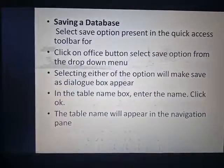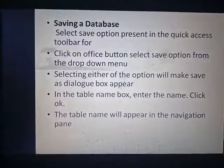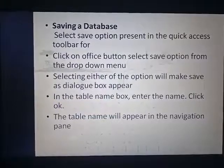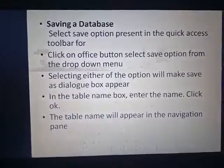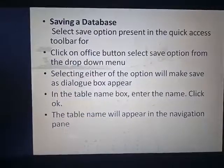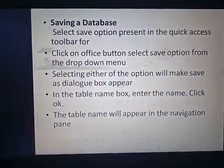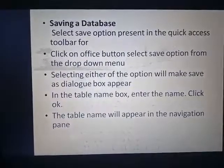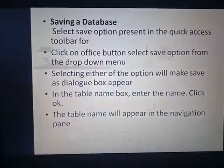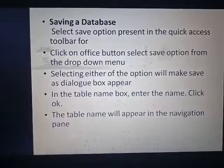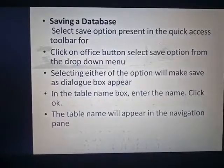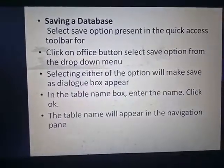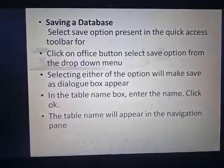For saving a database, we have to click on the Office button at the topmost side and after that click on Save, or we can click on Save As. Save As will always save a new copy, whereas Save will save the data in that particular table only.